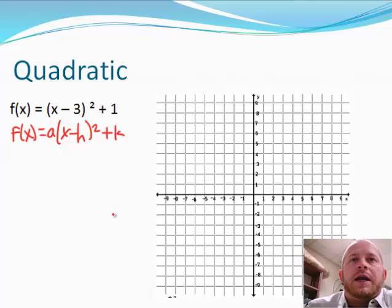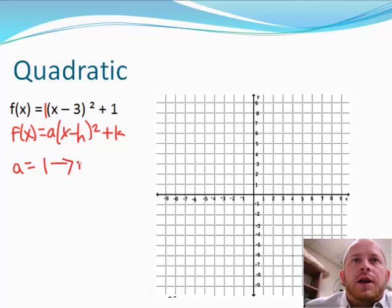Okay, we need to identify what each part is. First thing is with the a on this one, the a is equal to one because we don't have anything here that becomes a one. If you have a one, there is no change to the shape of your graph. Okay, now it won't get skinnier or wider or anything, there'll be no change to its shape. Your h right here is showing a negative 3.